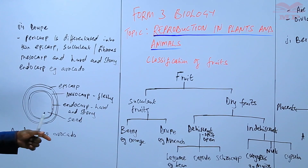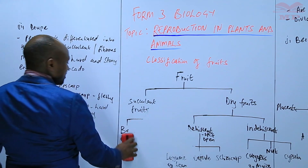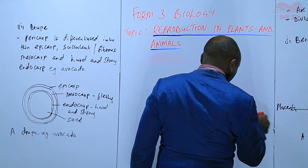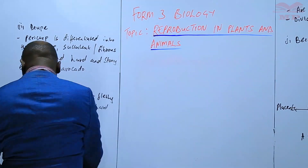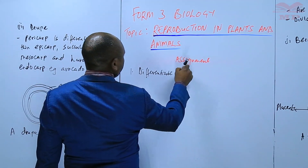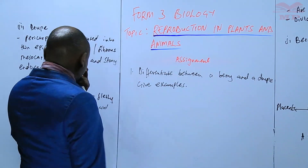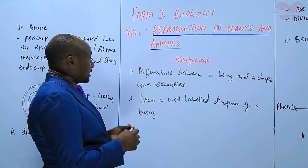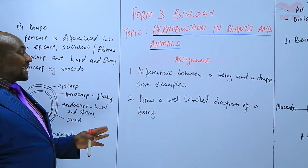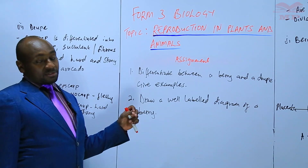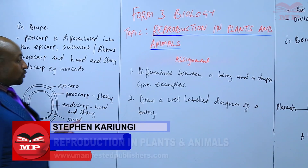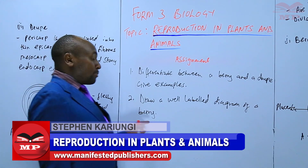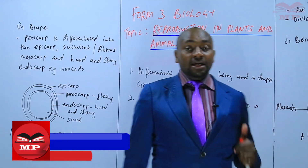We are going to have an exercise on the same. The first question in the assignment: differentiate between a berry and a drupe, and give examples. Number two: draw a well-labeled diagram of a berry. So we are going to stop there until next time. Goodbye.